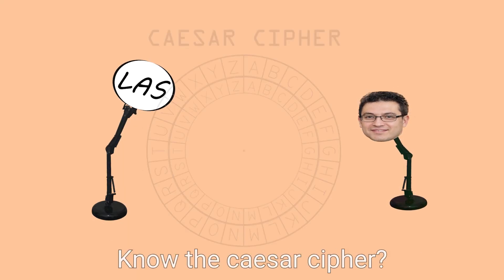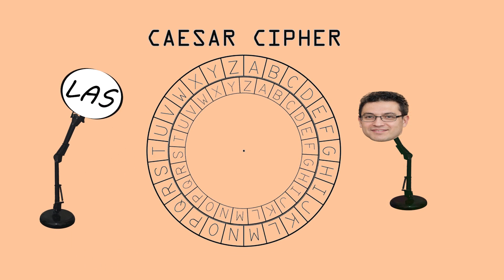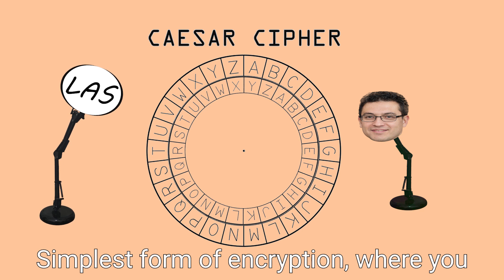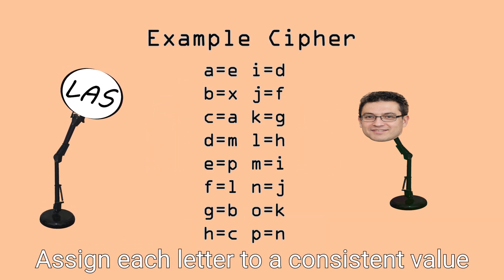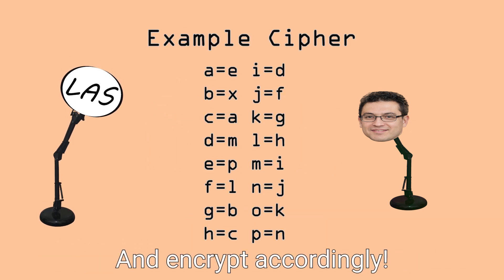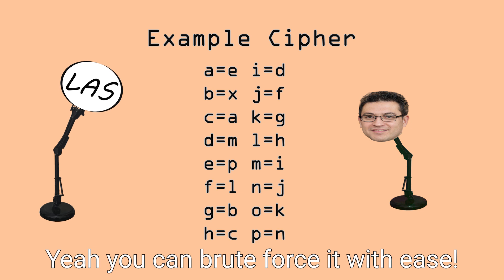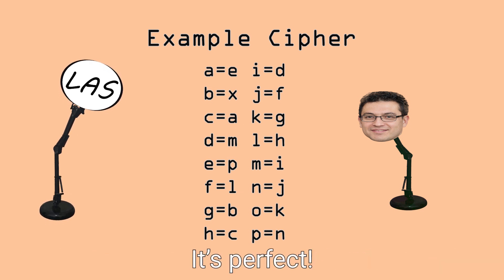What is that word? Know the Caesar cipher? Mono-alphabetic substitution is the simplest form of encryption, where you assign each letter to a consistent value and encrypt accordingly. You can brute force it with ease. It's perfect.